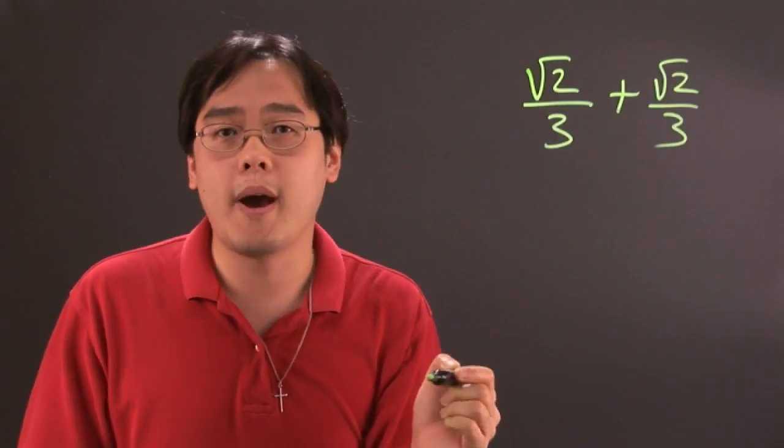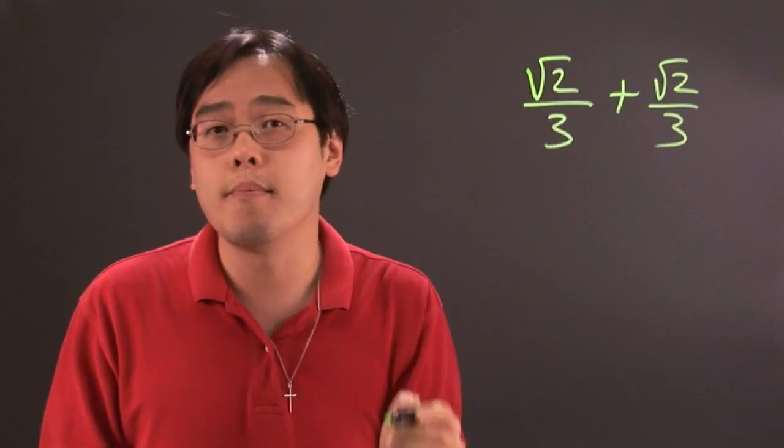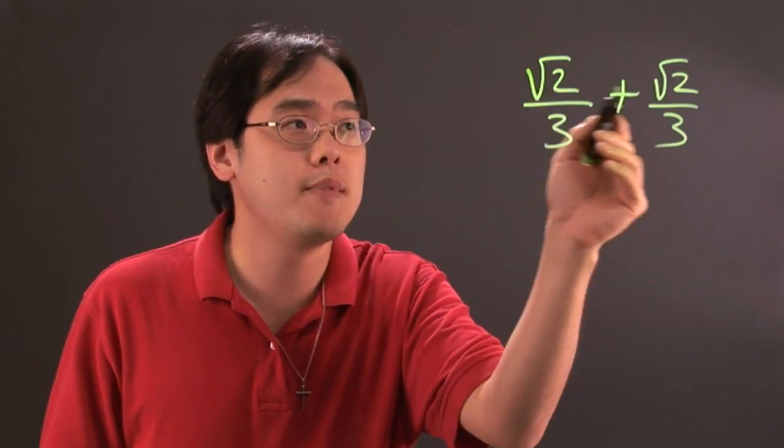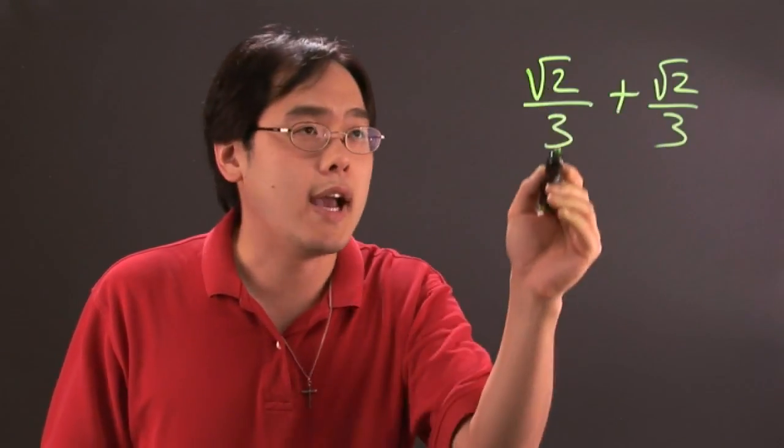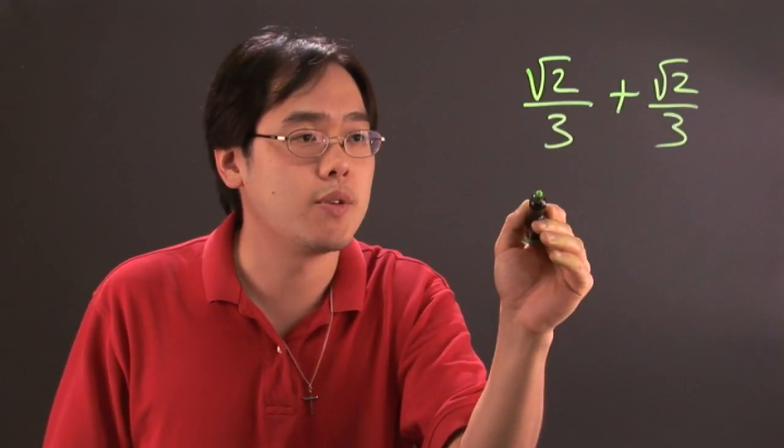What you have to think about is, the only way you can combine square roots is if they have the same number underneath the radical. In this case they both have 2's, so that's a good thing.